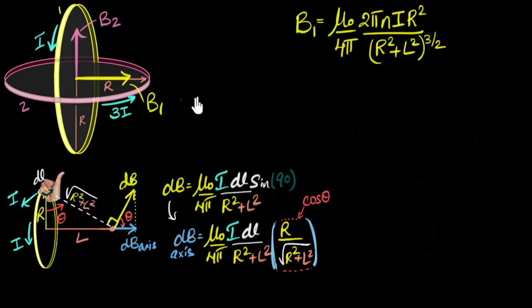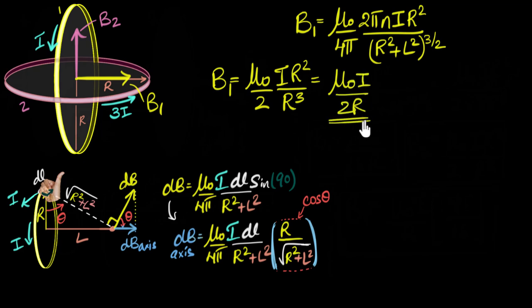Okay, now since I'm calculating magnetic fields at the center, the L value would be zero for both of them. So I can just quickly go ahead and substitute and figure out what B1 and B2 are. So B1 is going to be mu naught over two, n is one, I, R squared, divided by just R squared, so this is going to be mu naught I by two R.